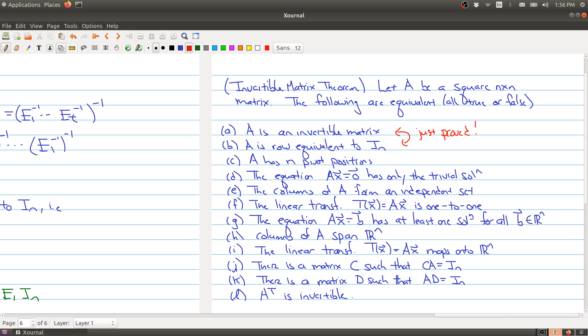So the next one is the columns of A form an independent set. If you're looking from the point of view of linear transformations, your matrix is invertible if the linear transformation is one-to-one.